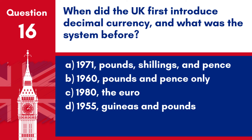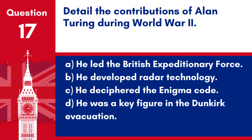Question 16. When did the UK first introduce decimal currency, and what was the system before? a. 1971, pounds, shillings and pence. b. 1960, pounds and pence only. c. 1980, the euro. d. 1955, guineas and pounds. Answer: a. The UK introduced decimal currency in 1971, transitioning from the traditional system of pounds, shillings and pence.